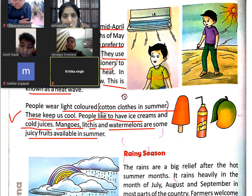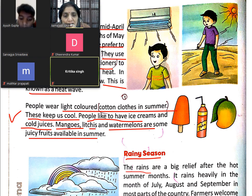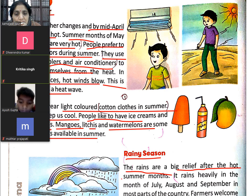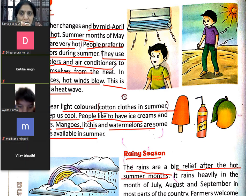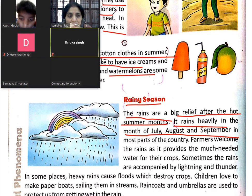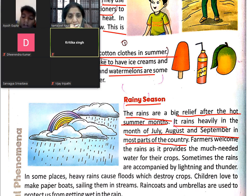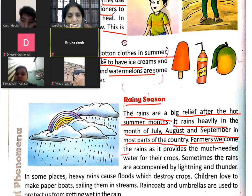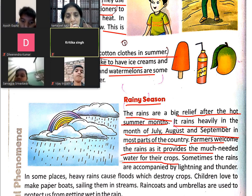Now, rainy season. The rain is a big relief after the hot summer months. It rains heavily in the month of July, August, and September in most parts of the country. Farmers welcome the rain as it provides the much-needed water for their crops.